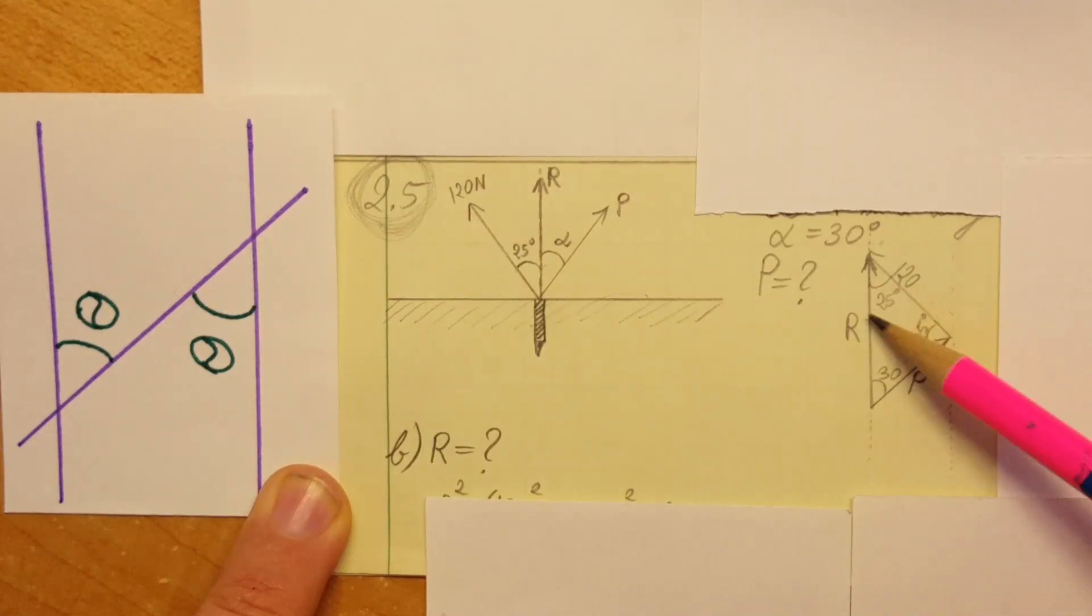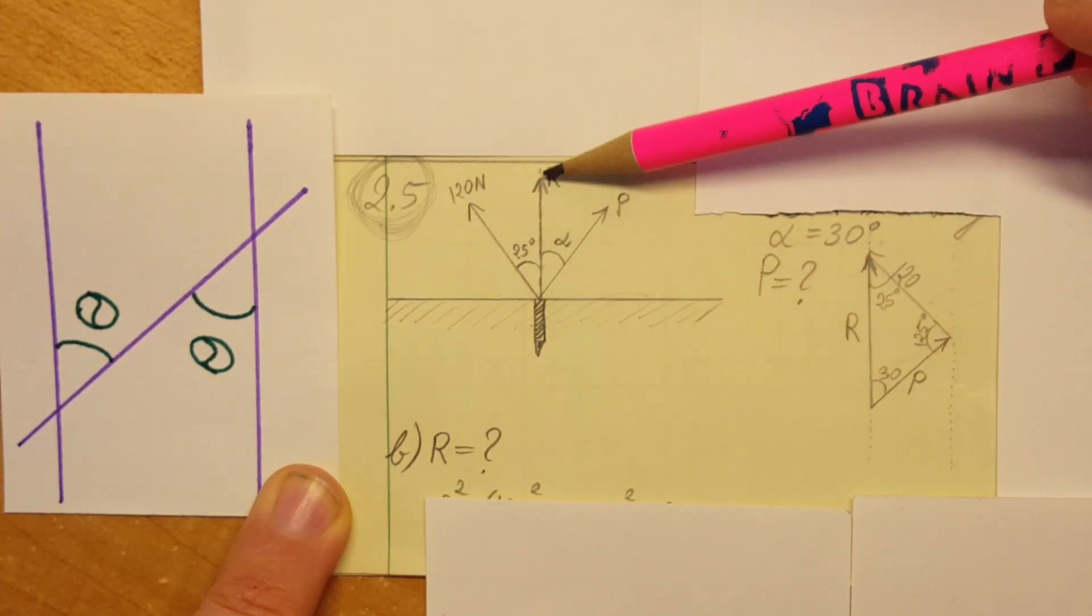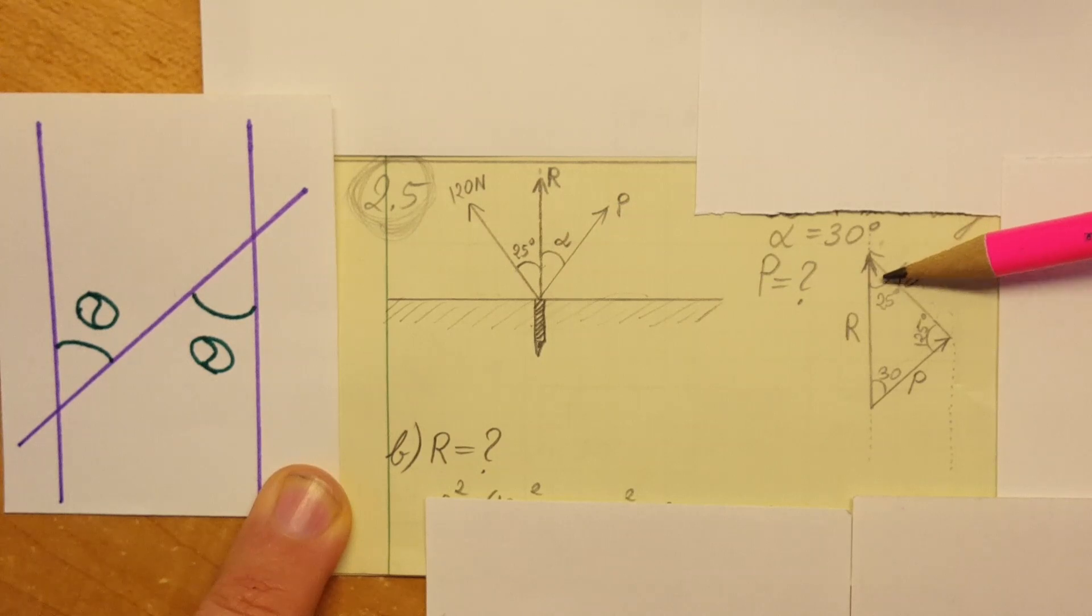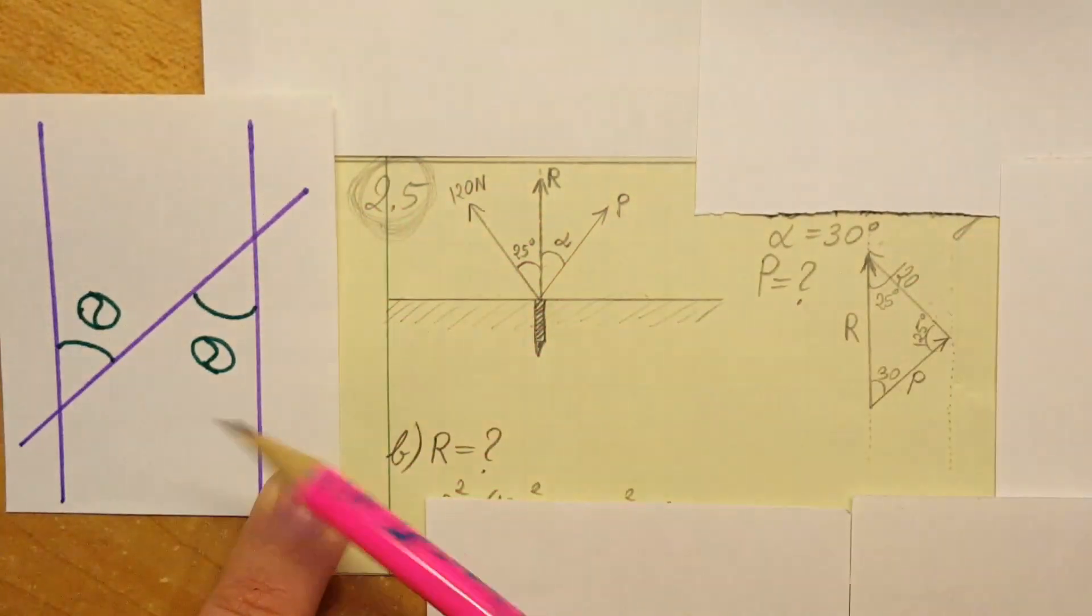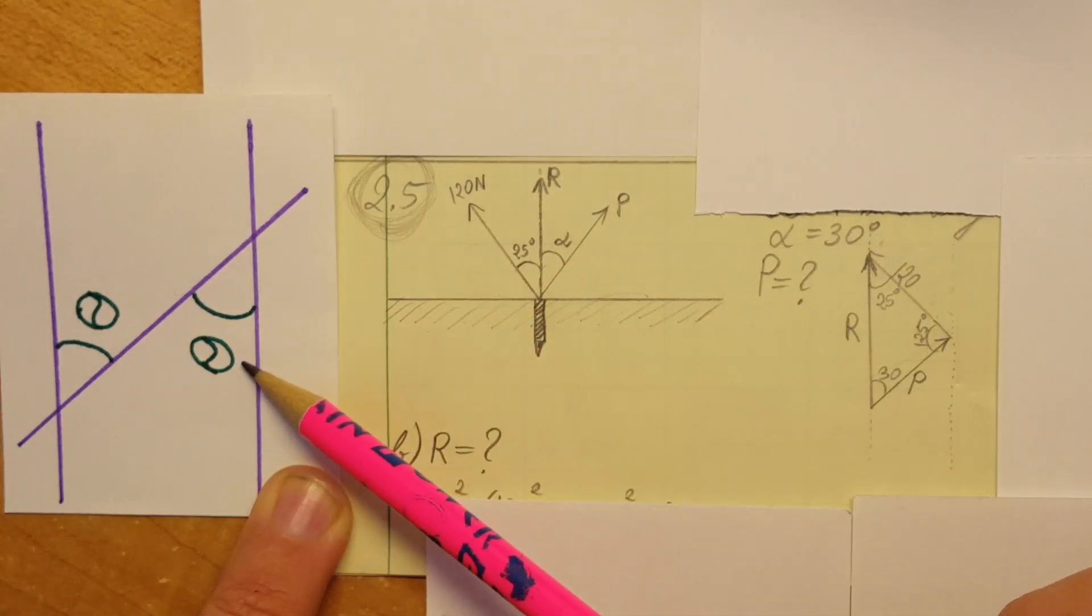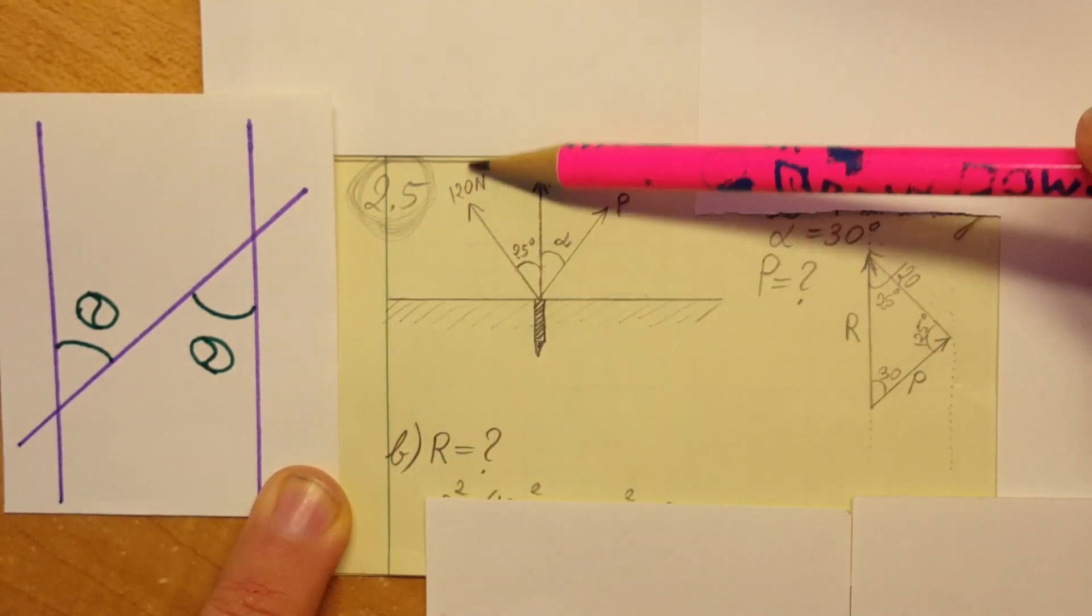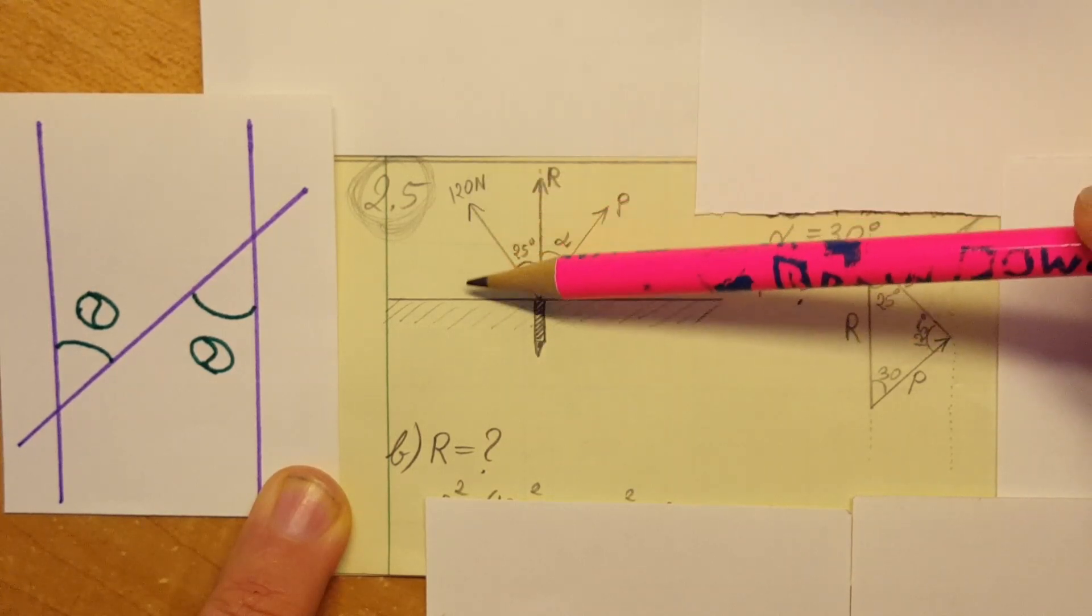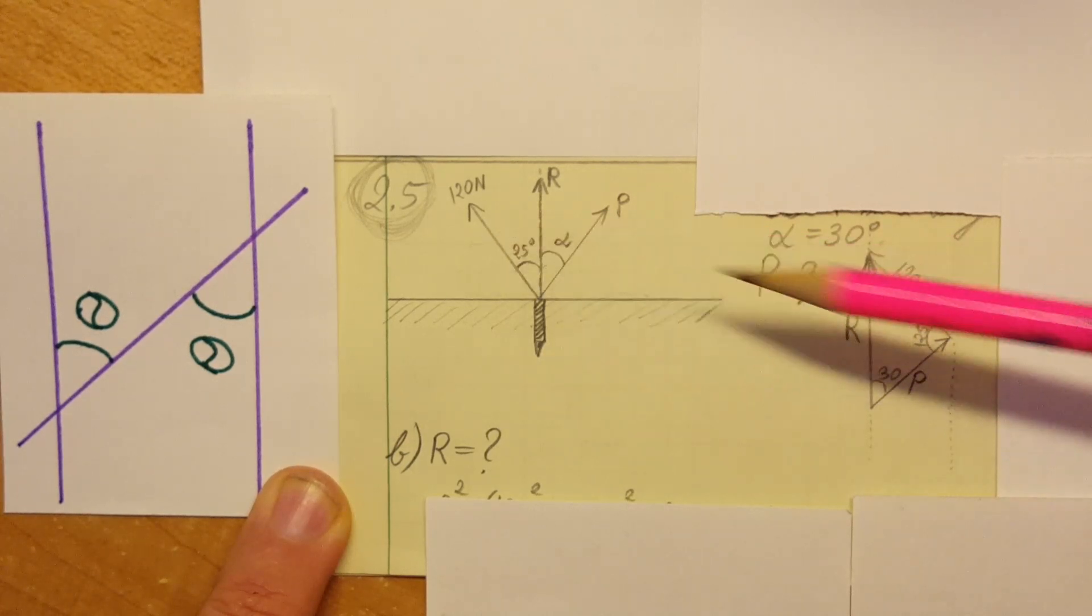Now we calculate this angle right here. We know that the 120 vector is from here and next to it is this vertical line. From trigonometry we remember that if we have two parallel lines, when this one is crossing, this angle and this angle will be the same. By having another vertical line right here, we're going to have this setup and we know that this angle is the same as this one down here. That's what we have here: 25 degrees, 25 degrees.